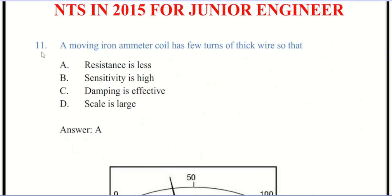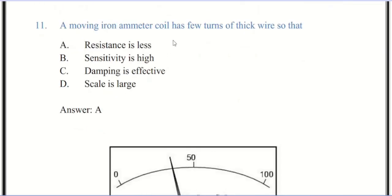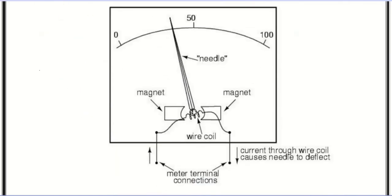Now we are coming to question number 11. A moving iron ammeter coil has a few turns of thick wire so that there is low resistance. The correct answer is A. You see the figure of moving iron ammeter. There are two types: attraction type and repulsion type. In both types, the principle of operation is the force experienced by an iron piece in the presence of magnetic field.